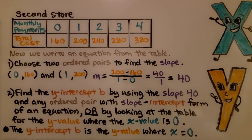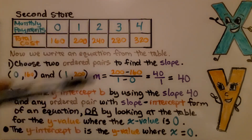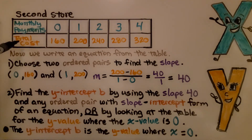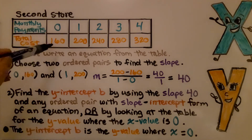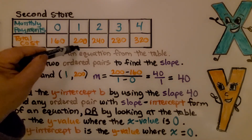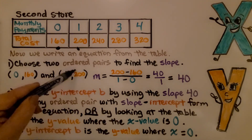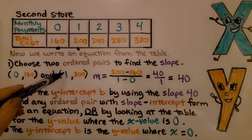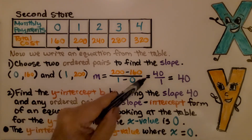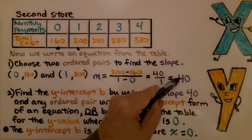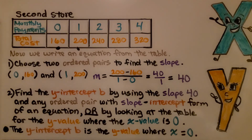Now let's do the second store. We have our table with monthly payments going from zero to four months and the corresponding total cost. We write an equation from the table by choosing two ordered pairs to find the slope — I'll choose (0, 160) and (1, 200). Using the slope formula: 200 minus 160 over 1 minus 0 gives us 40 over 1, which equals 40. The slope is 40.